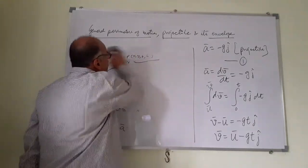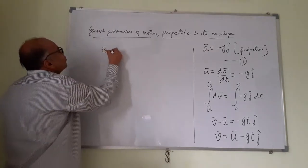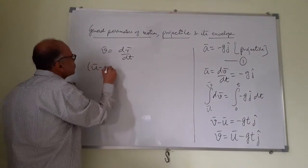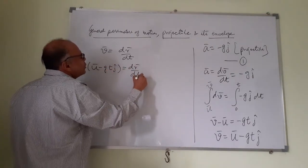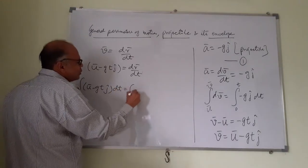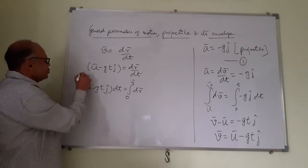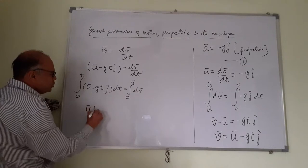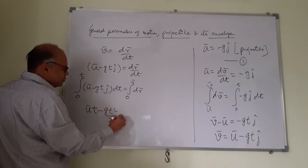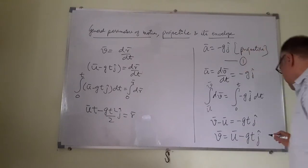We can get the instantaneous position using v = dr/dt. We know v = u − gtj = dr/dt. Integrating again with limits 0 to t and position 0 to r (particle initially at the origin): integrating u dt gives ut, and integrating t dt gives t²/2. So we get r = ut − (g t²/2)j. That is the second equation.